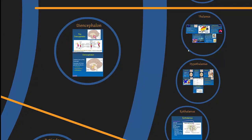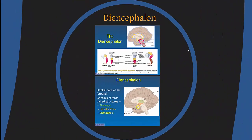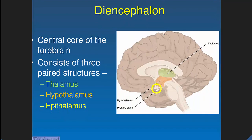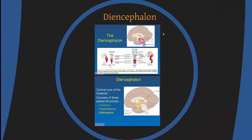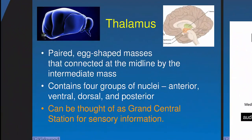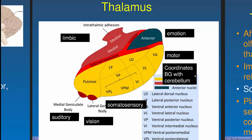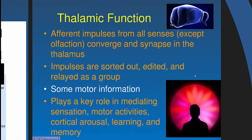The last forebrain region is the diencephalon — everything in the middle below the telencephalon. It includes the thalamus, hypothalamus, and epithalamus. The thalamus is essentially Grand Central Station for sensory information — all sensory input except possibly smell passes through it. It's paired and egg-shaped, right around the third ventricle, and contains multiple groups of nuclei receiving auditory, visual, and somatosensory information. Its role is to sort out what information is important right now.